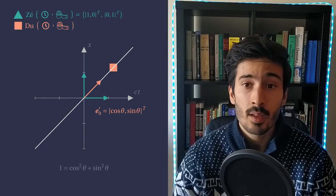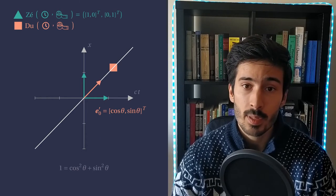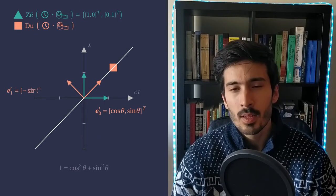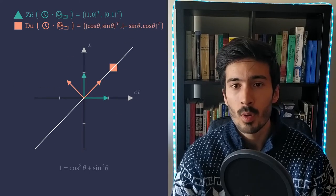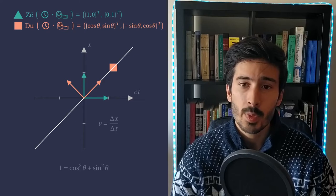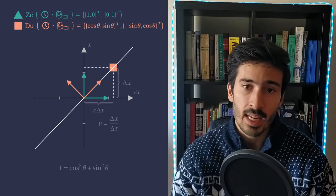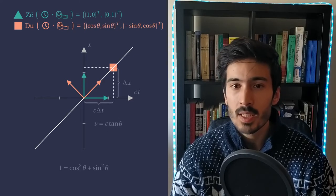Since space and time are independent, the vector corresponding to the measuring stick will be orthogonal. Now, how is theta related to the physics of our problem? Well, from the definition of velocity, we can see that v is equal to the tangent of theta. We will keep this in mind.